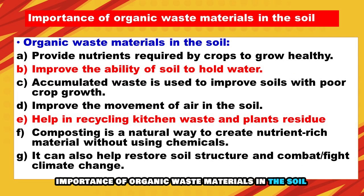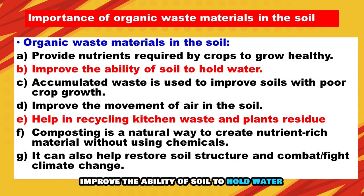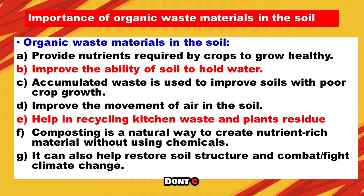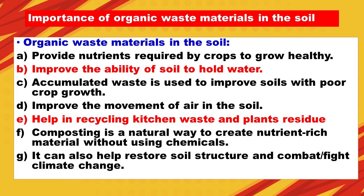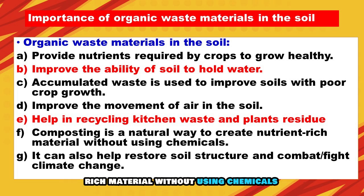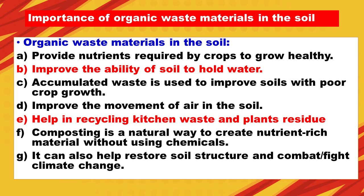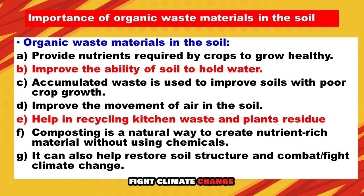Importance of organic waste materials in the soil: A. Provide nutrients required by crops to grow healthy. B. Improve the ability of soil to hold water. C. Accumulated waste is used to improve soils with poor crop growth. D. Improve the movement of air in the soil. E. Help in recycling kitchen waste and plant residue. F. Composting is a natural way to create nutrient-rich material without using chemicals. G. It can also help restore soil structure and combat climate change.